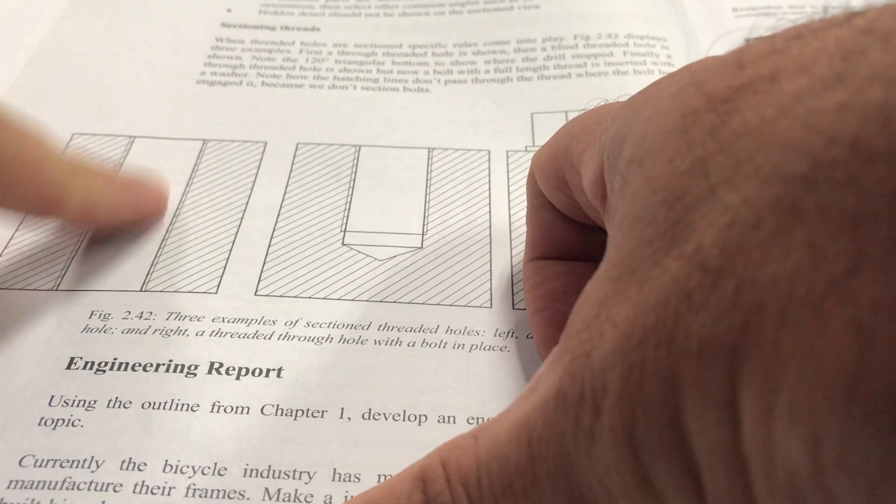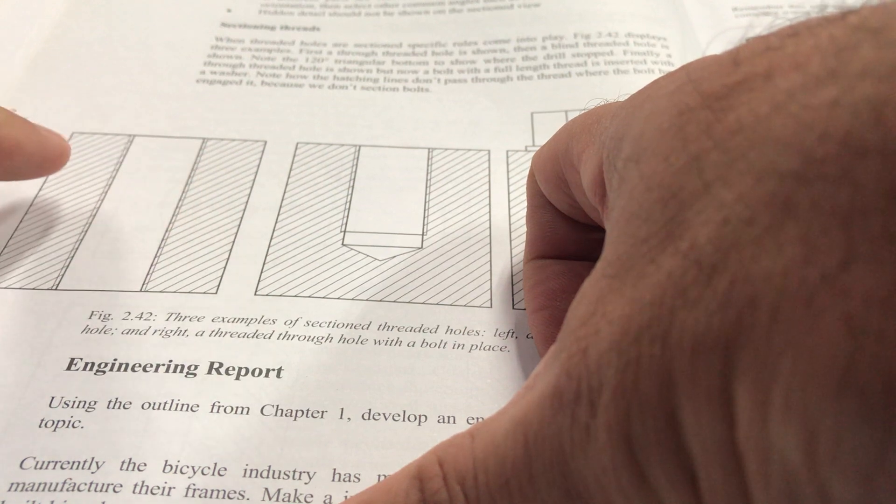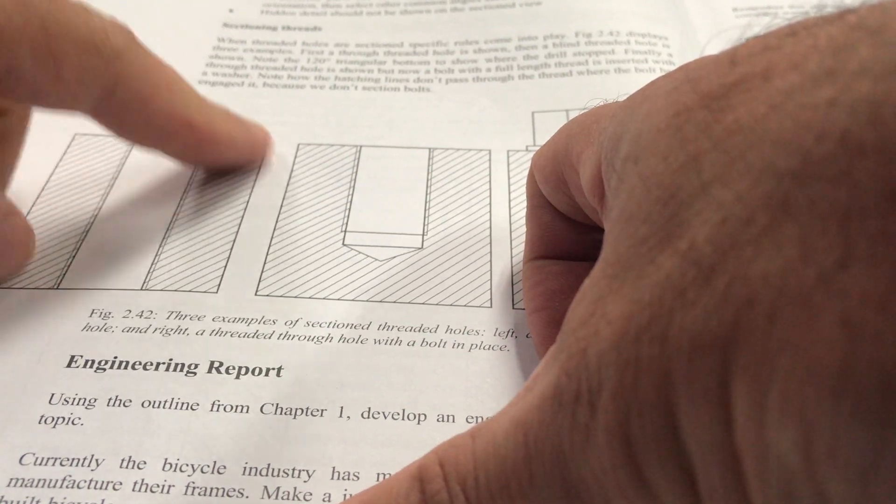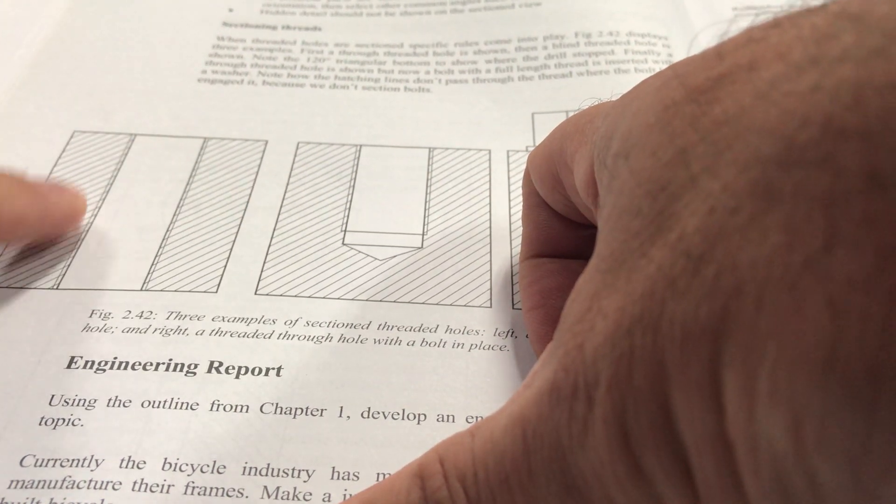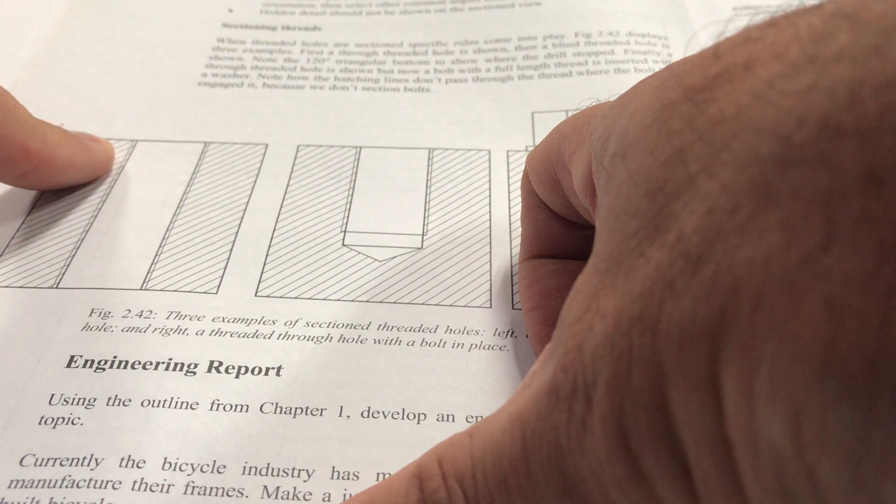So that's a through hole and you can see it's sectioned, it's the same, hatching is going the same direction as both sides, so that's one piece and you hatch through the thread line.